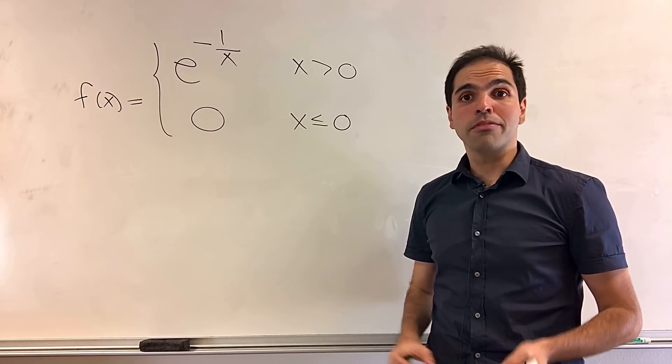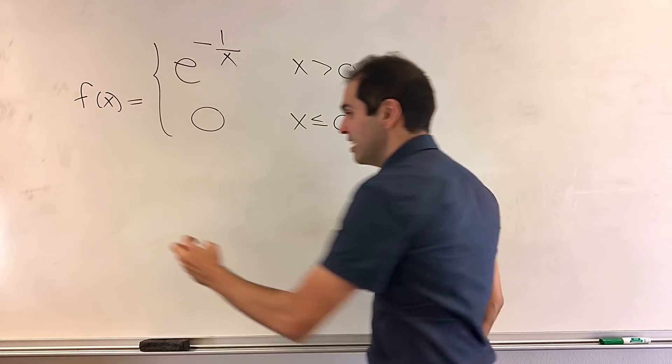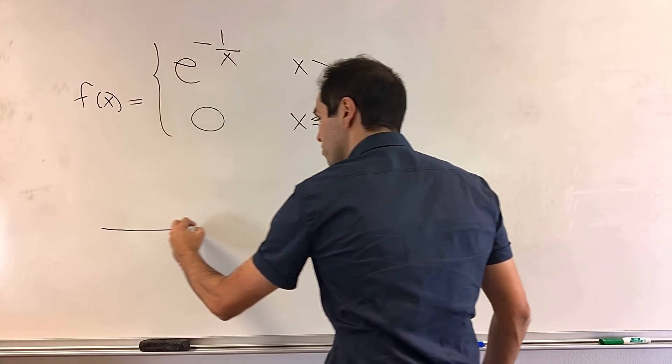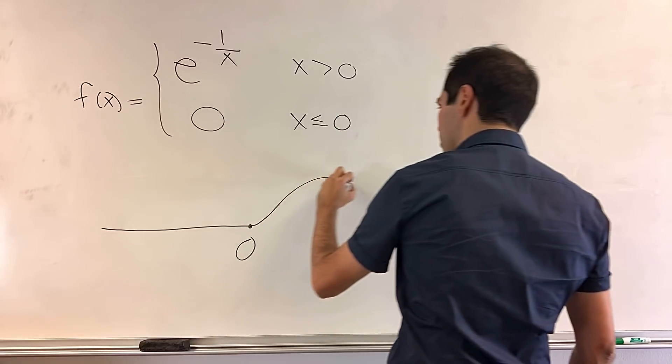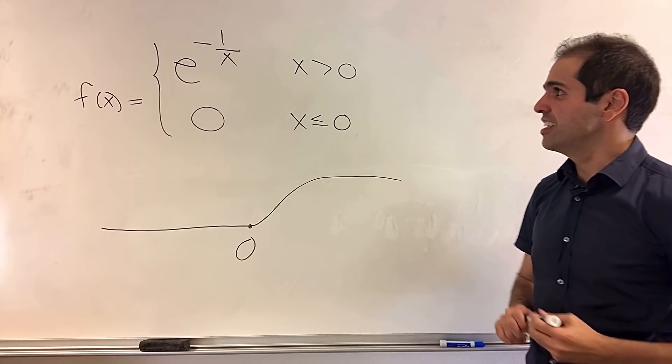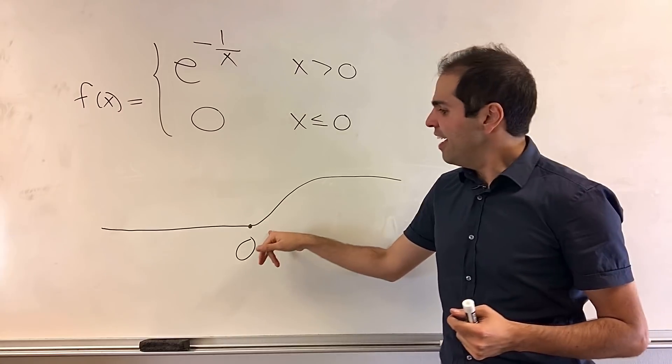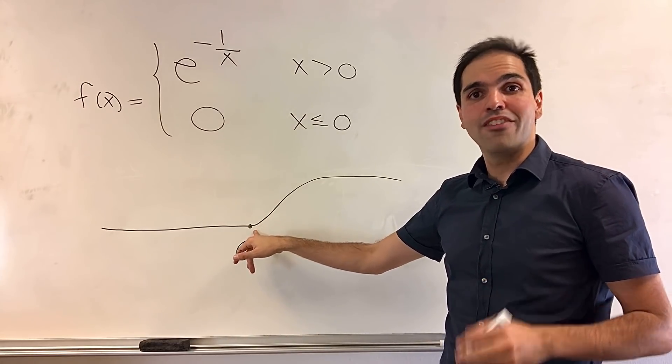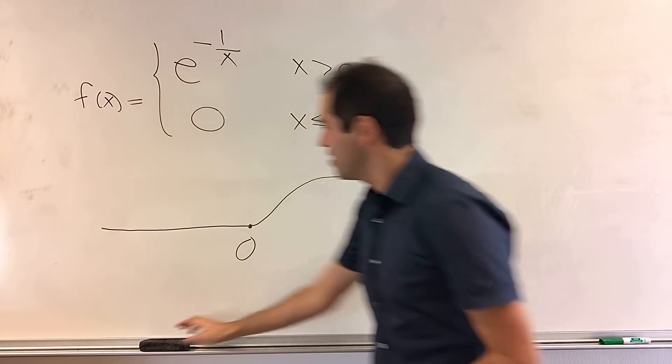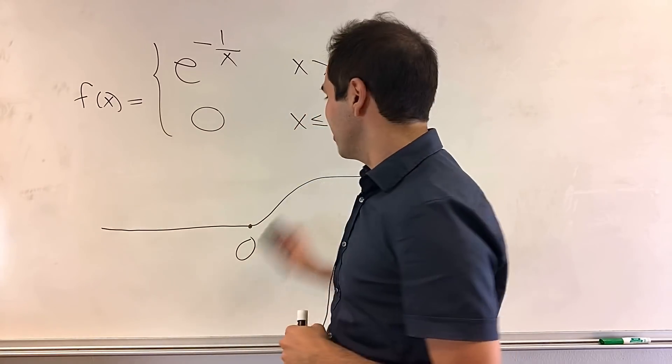This is sometimes called a transition function because it transitions from zero to basically one. So this is the function here. And what I'll show now is that all the derivatives of f at zero are zero. And then I'll give you some cool consequences of this.